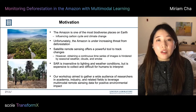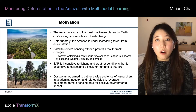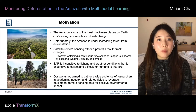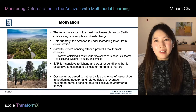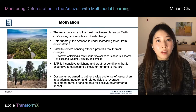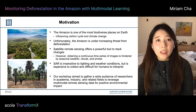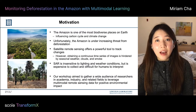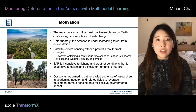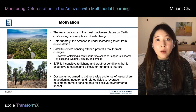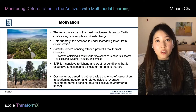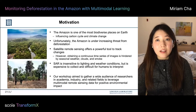Since much of the region is difficult to access, remote sensing offers a powerful tool to track changes in the region. But obtaining a continuous time series of images is hindered by seasonal weather, clouds, and smoke. Synthetic aperture radar is insensitive to lighting and weather conditions, but is expensive to collect and also difficult to visually interpret. A key component of our challenge is monitoring the Amazon rainforest in all weather and lighting conditions using multimodal remote sensing data, which includes multispectral and synthetic aperture radar images.